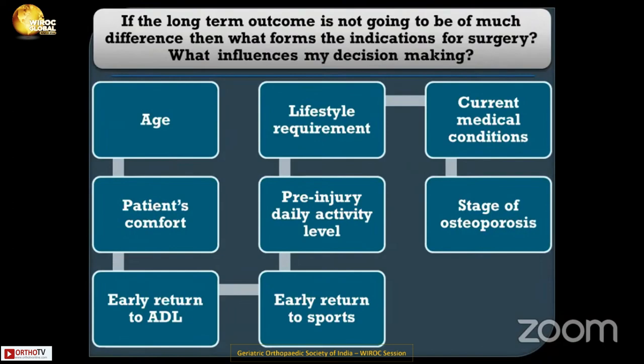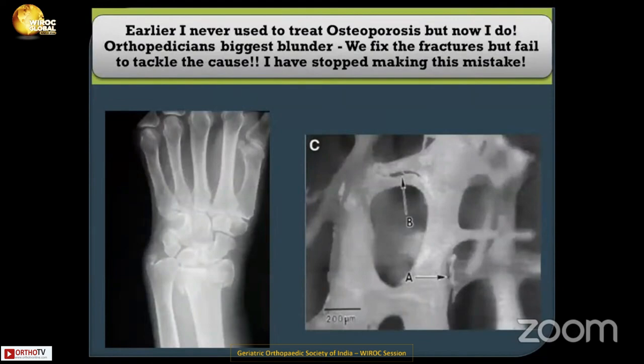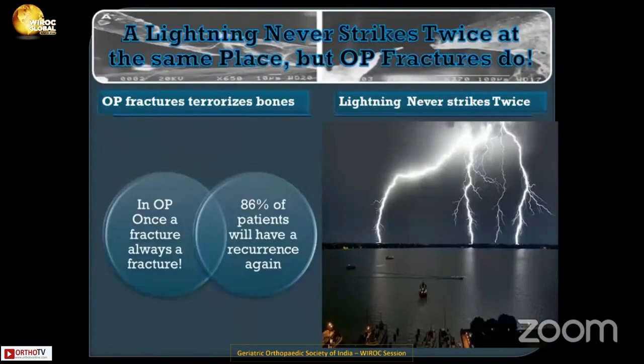When no single method makes a significant difference, what dictates my decision-making? It is age, patient's comfort, early return to activities of daily living, early return to sports, pre-injury daily activity level, lifestyle requirement, current medical conditions, and stage of osteoporosis. I have stopped making the mistake of not treating osteoporosis and treating only the fracture, because osteoporosis always comes with a secondary fracture 86% of the time.